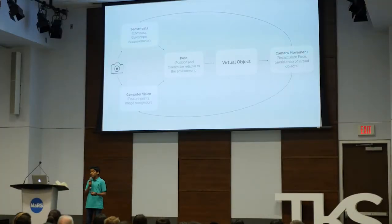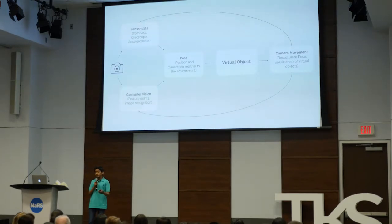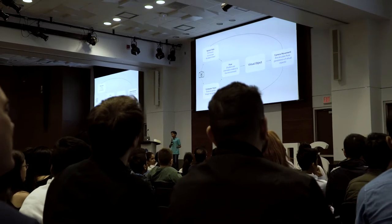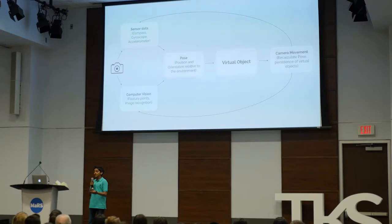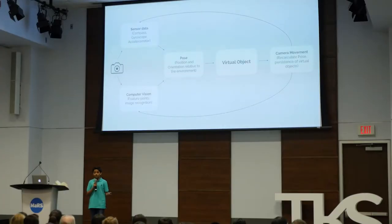First, data comes in through your camera from your environment. Then sensors are used — such as your compass, gyroscope, and accelerometer — to find out your orientation and position within the environment. This data is further enhanced using computer vision to find feature points and planes within your environment. The sensor data and computer vision are then used to calculate your pose, which is your position and orientation relative to your environment.